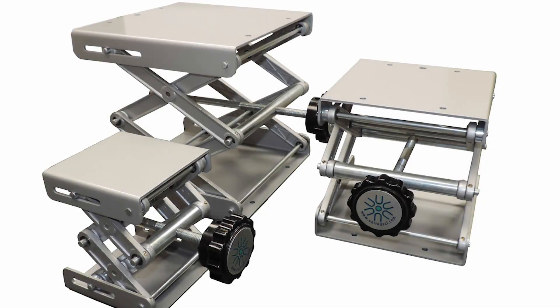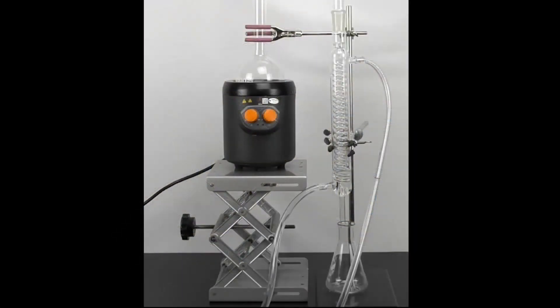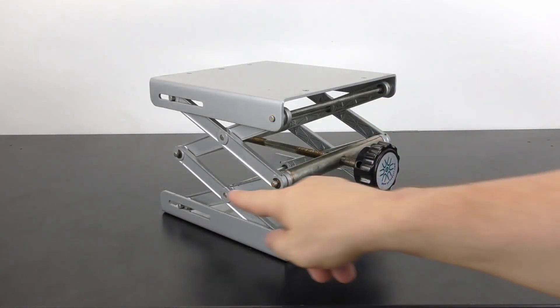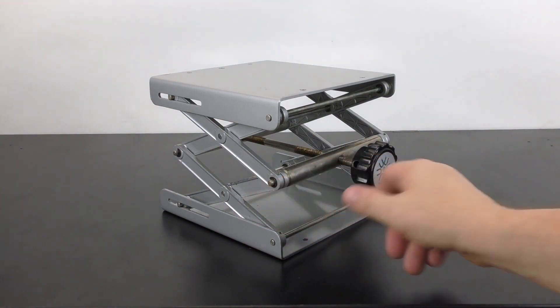With all the different sizes of labware, a good lab jack is a necessity. Constructed of aluminum and steel, they are durable and hold anywhere from 22 to 55 pounds depending on the model. One example where a lab jack is very useful is when you're using a heating mantle with a distillation apparatus.